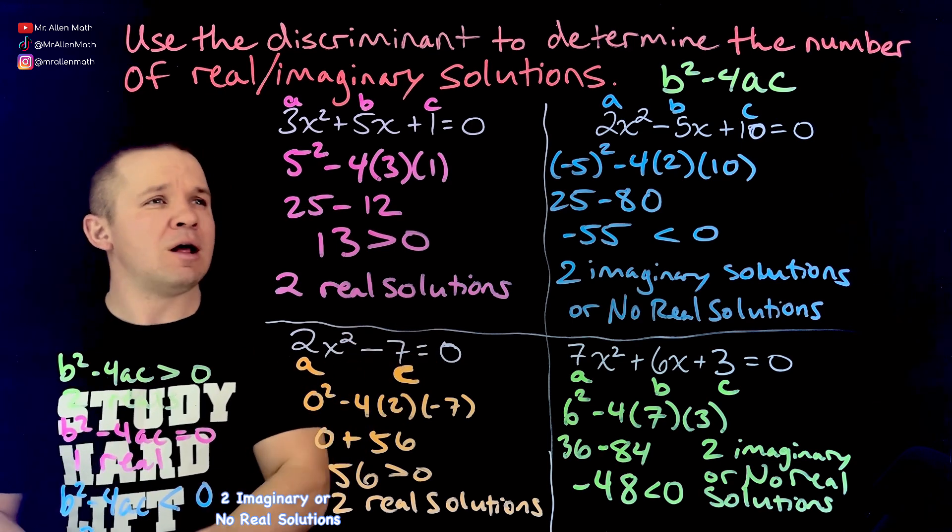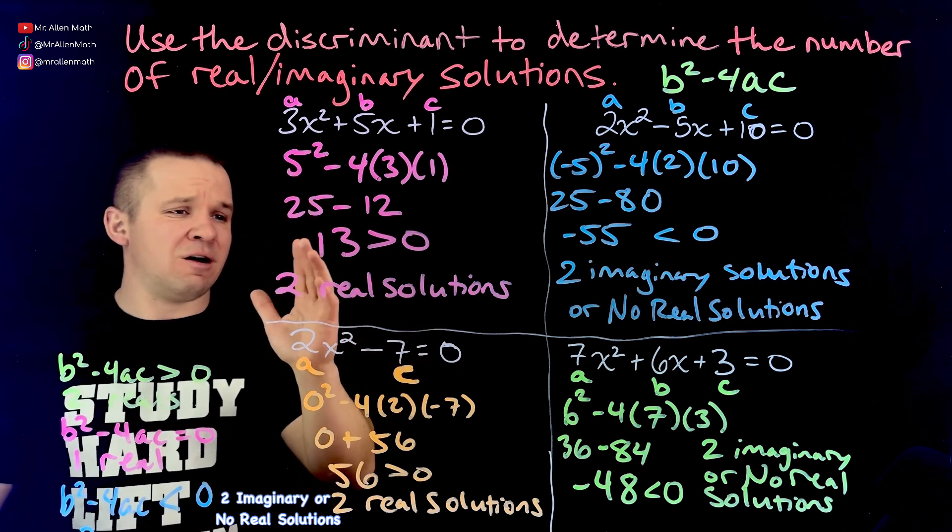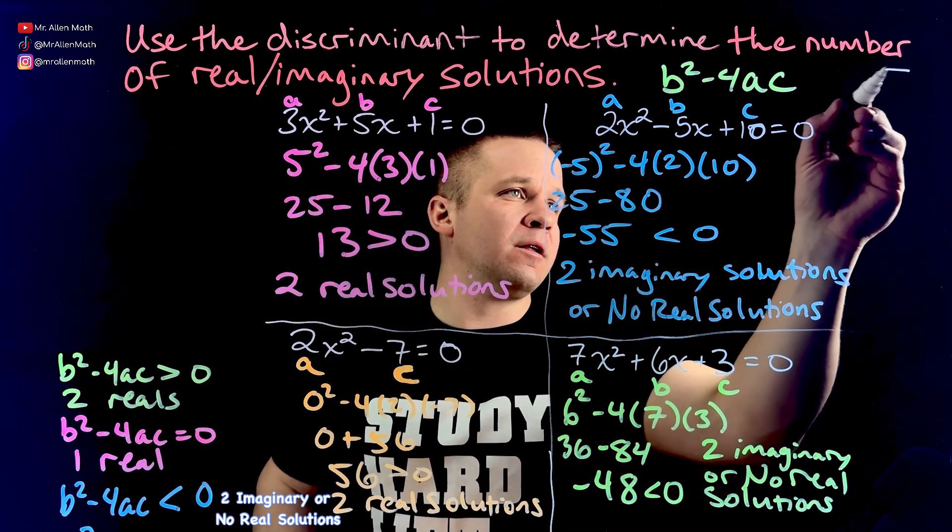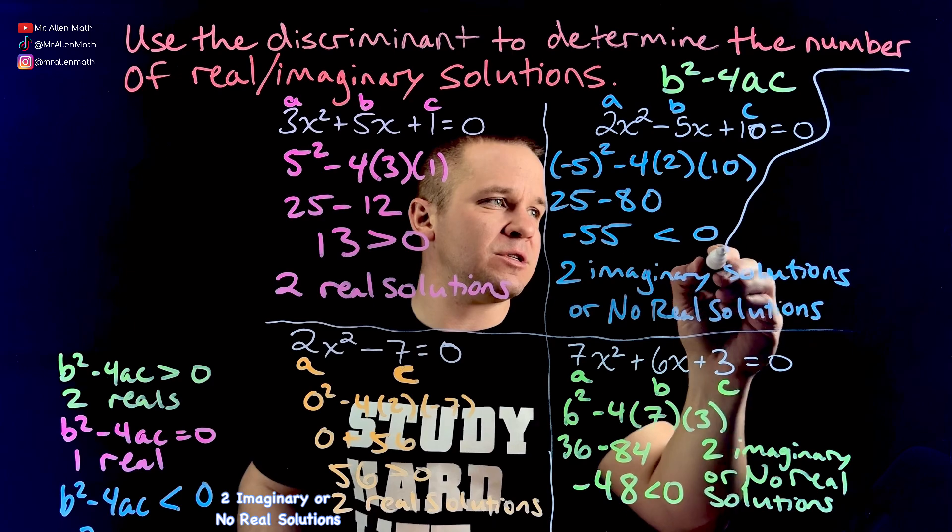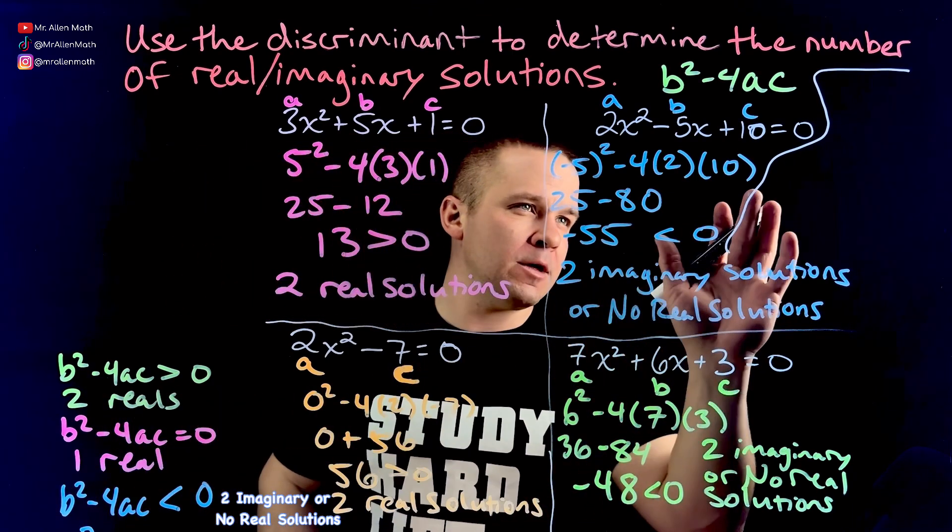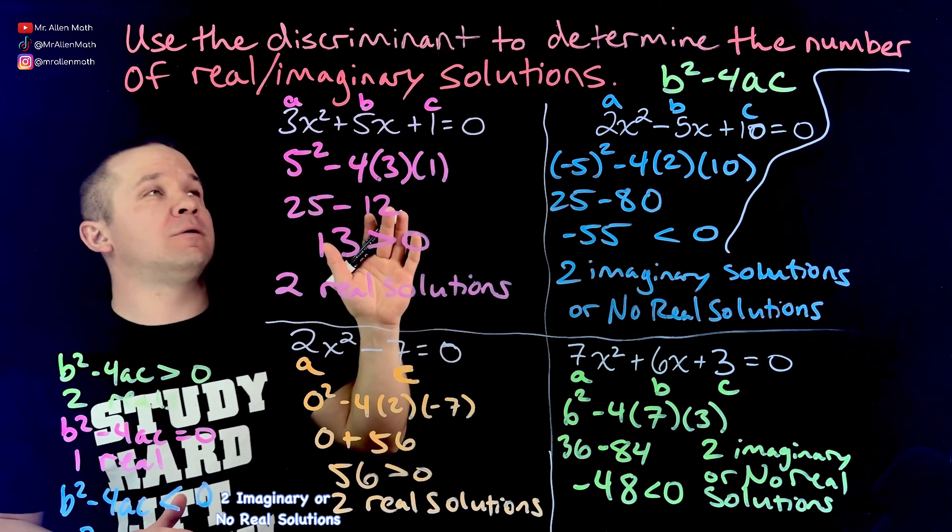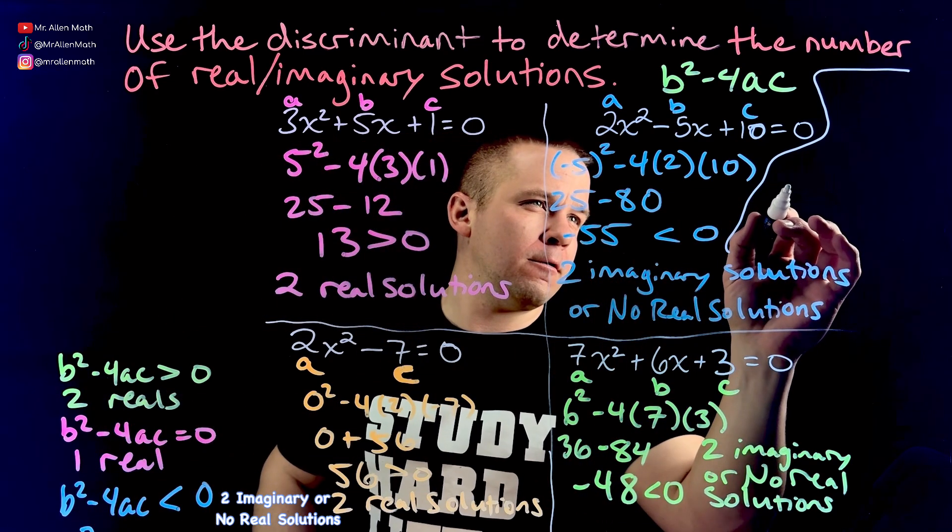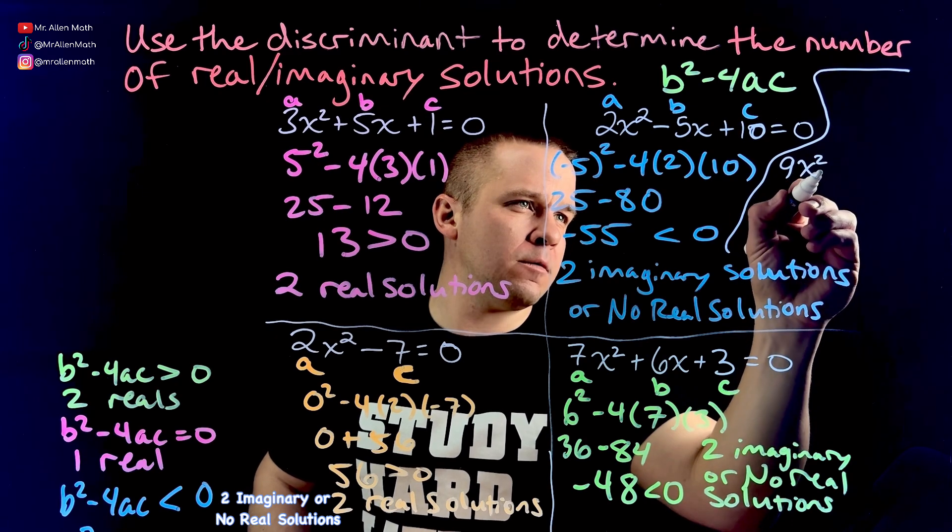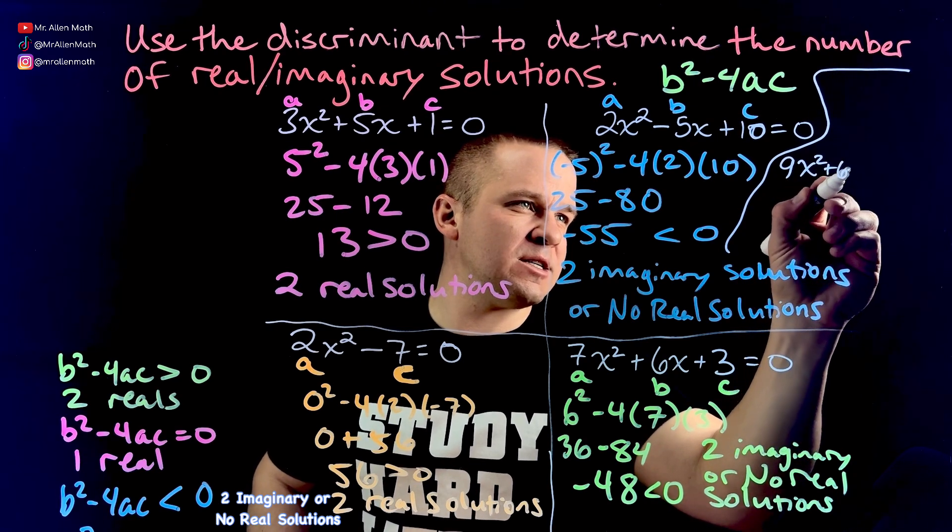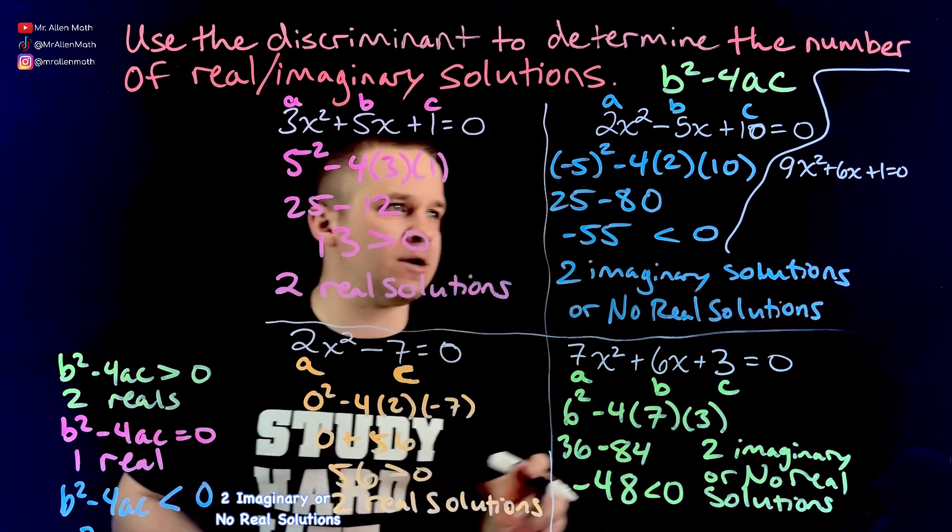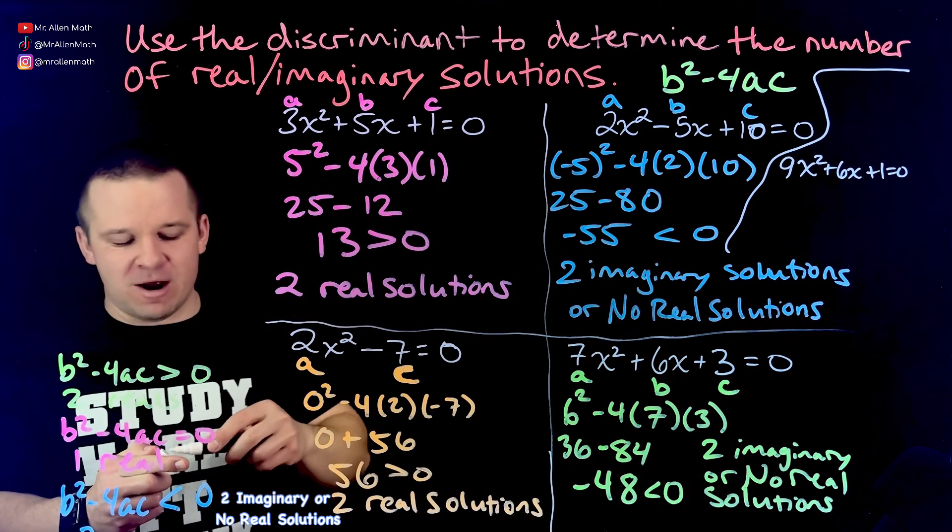Let's see if I can think of one in my head real quick. One real quick. And I've got a little space right here. A little space. We're going to do a situation where there's one real. Let's see here. Let's go with 9X squared plus 6X plus one equals zero. There we go. Tiny little guy right there.